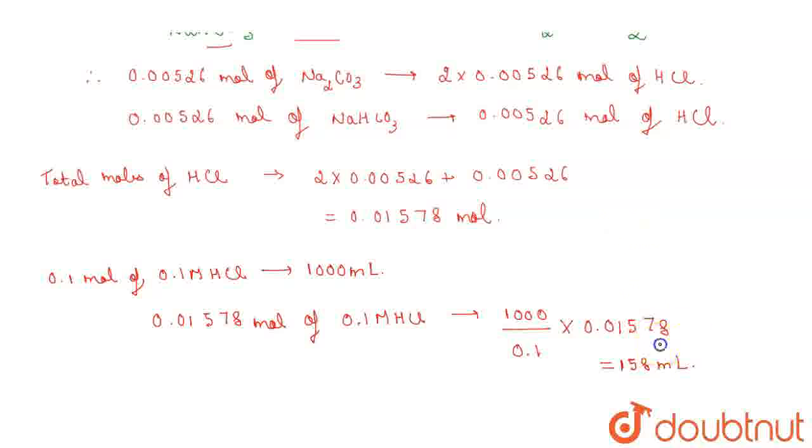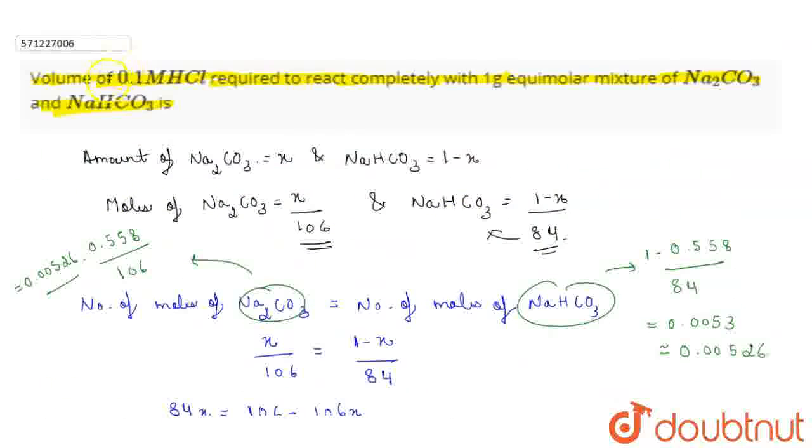So, therefore 158 ml of volume of 0.1M HCl is required to react completely with 1 gram of equimolar mixture of Na2CO3 and NaHCO3. Clear? So, this is the solution. Thank you.